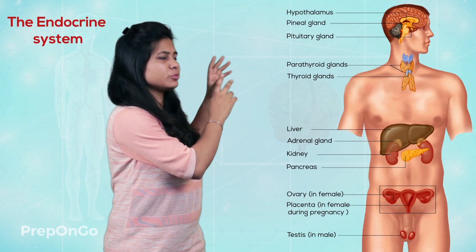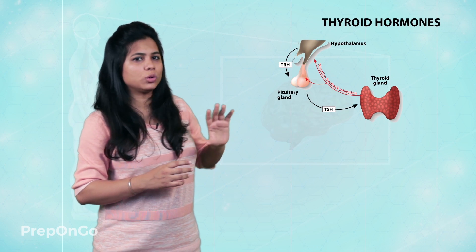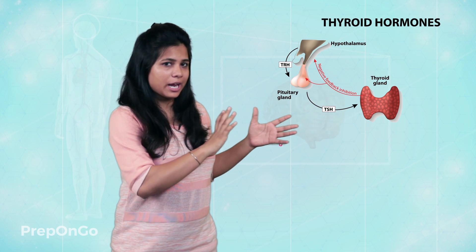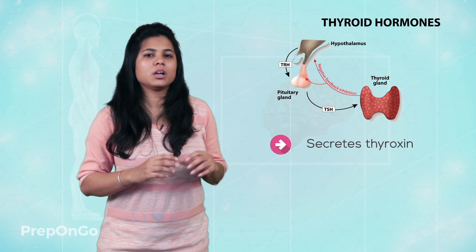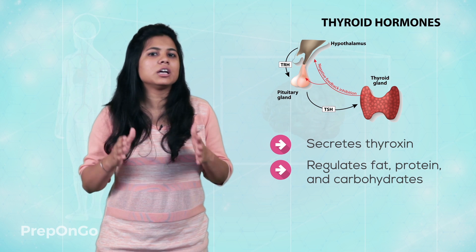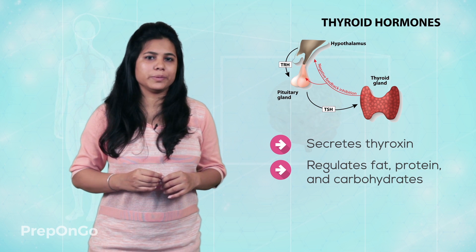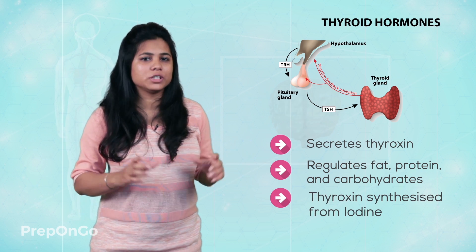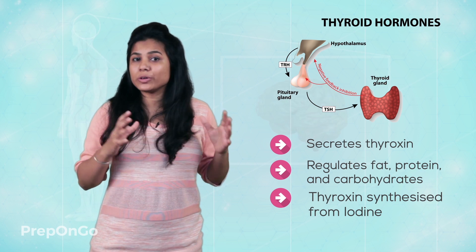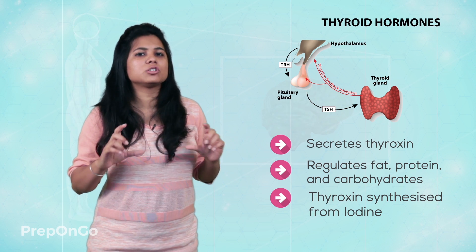We have seen the three glands present in the brain. Now let's come to a lower part of the body — the neck. The neck has two glands: the thyroid glands and the parathyroid glands. The thyroid gland secretes a hormone called thyroxine. Thyroxine is responsible for the regulation of carbohydrates, proteins, and fats metabolism so as to provide the best growth to the body. Iodine is important for the synthesis of thyroxine, and iodine is mainly found in salts — which is why salt advertisements on TV focus on the iodine content of salt.